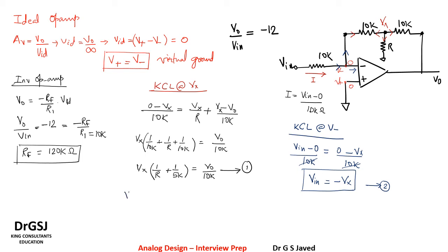Now let us divide equation 1 by equation 2. So we get V naught by 10K times 1 over V in. I have divided this portion and this portion such that we get V naught by V in on the left hand side, that is equal to V_x times 1 by R plus 1 by 5K divided by minus V_x. This can get cancelled, so we get here this ratio.